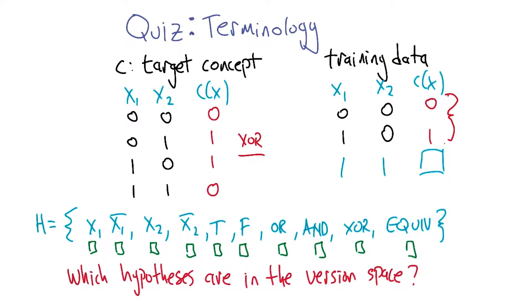All right, Charles, what do you think? Okay, so being in the version space just means that you're consistent with the data that you see, right? Good. Okay, so we should be able to very quickly go through this.